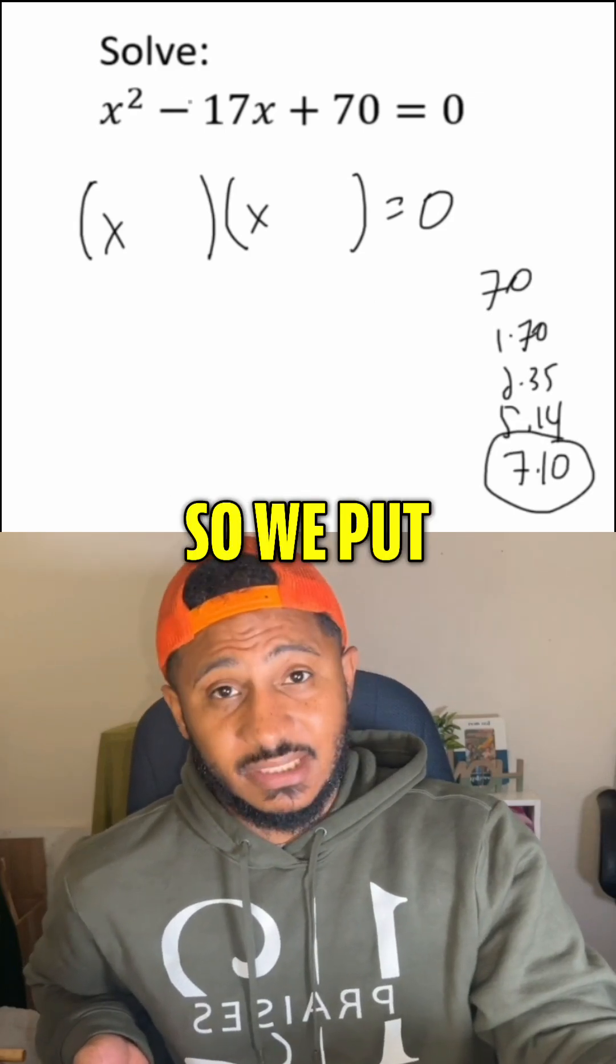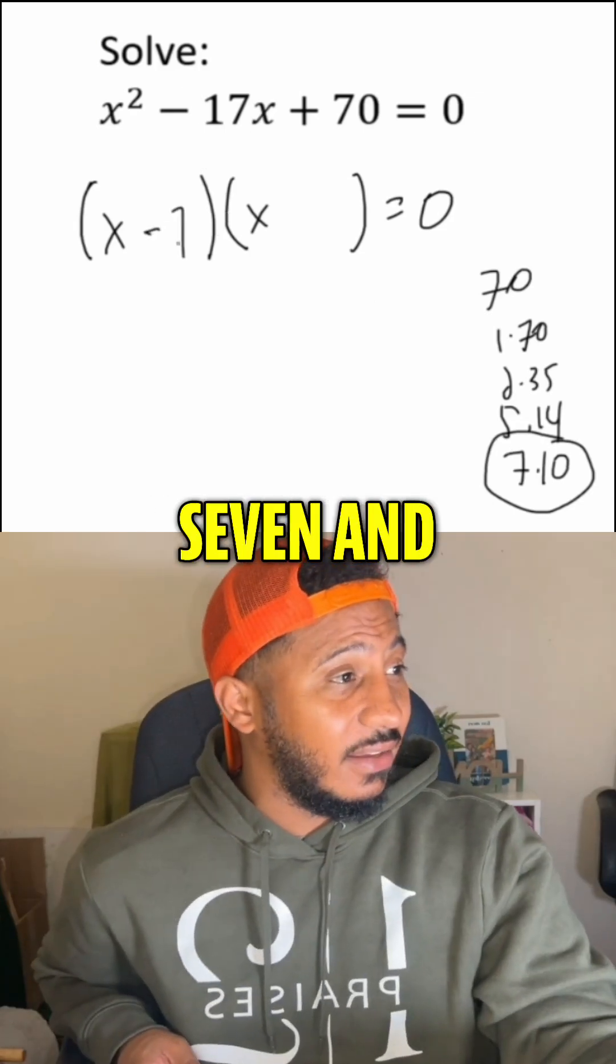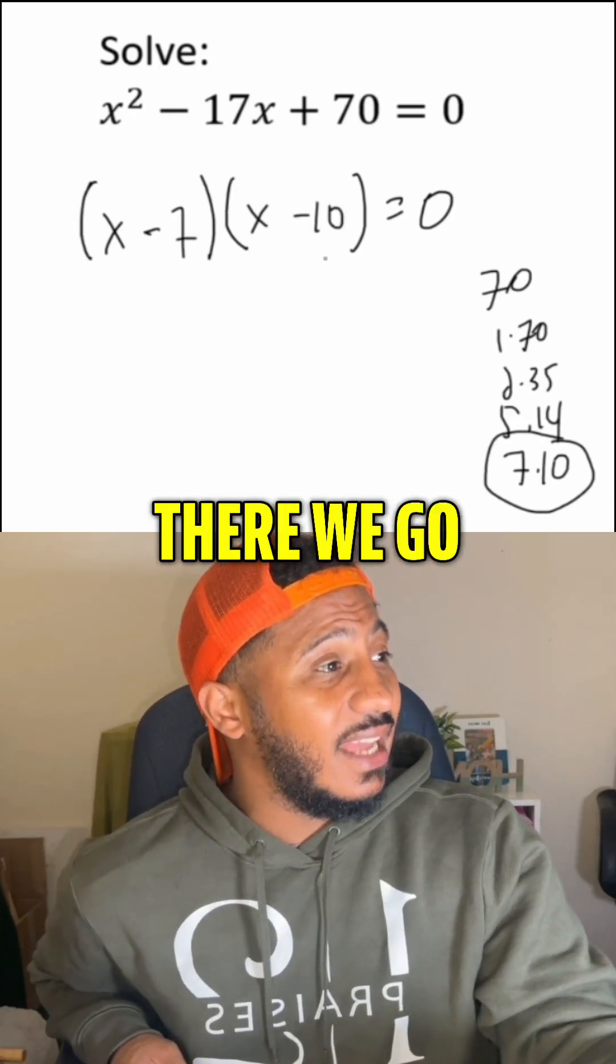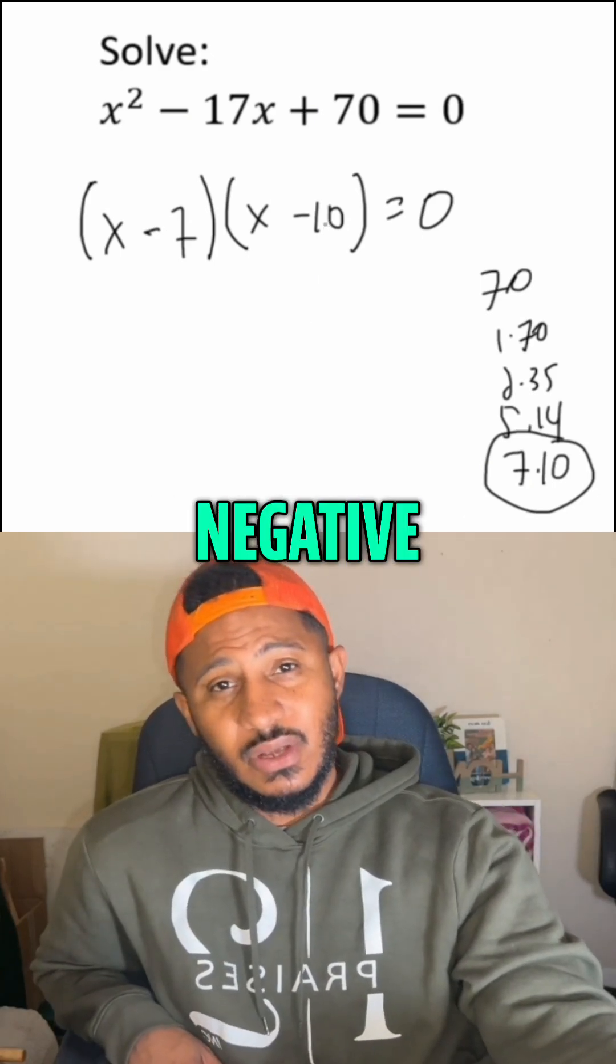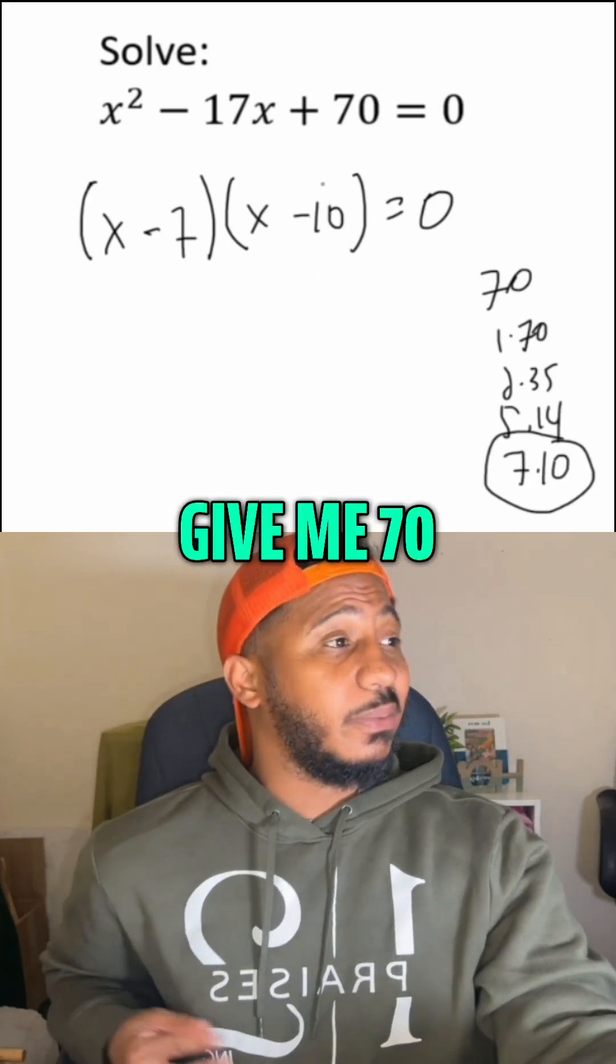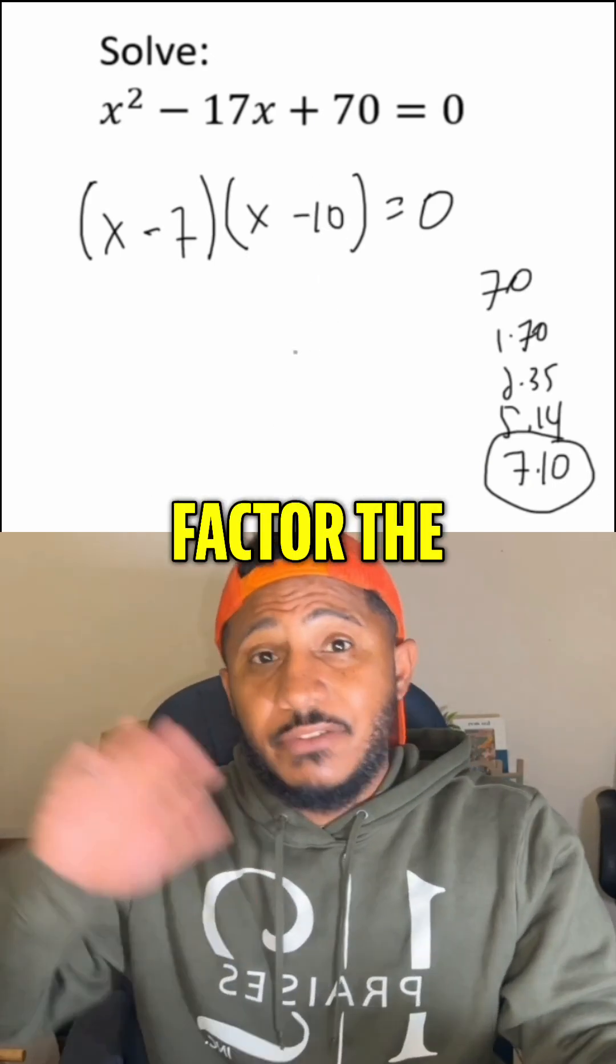However, we have a negative 17, so we'll put negative both. So negative seven and negative 10. There we go. So they combine to give me negative 17, and then multiply to give me 70. So we get zero on one side, factor the other side,